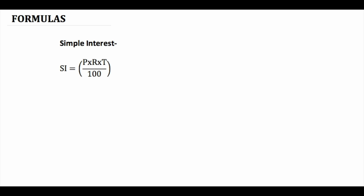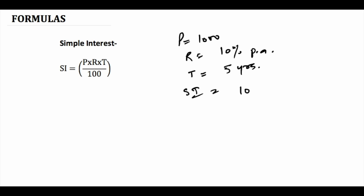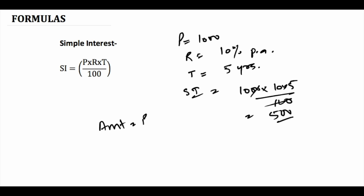The first formula is simple interest: principal into rate of interest into time period upon 100. For example, if you have principal as 1000 rupees invested at the rate of 10 percent per annum for five years, the simple interest would be 1000 into 10 into 5 upon 100, which is 500. So the amount at the end of five years would be simple interest plus principal.